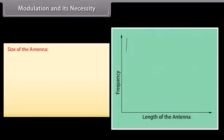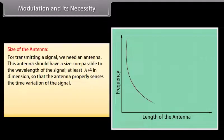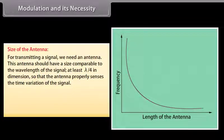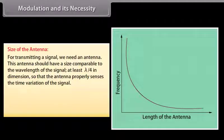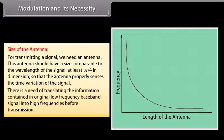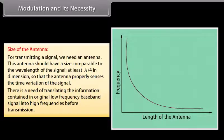Size of the antenna: for transmitting a signal, we need an antenna. This antenna should have a size comparable to the wavelength of the signal — at least λ/4 in dimension — so that the antenna properly senses the time variation of the signal. For an EM wave of frequency 30 kHz, the wavelength λ is 10 km. It is not possible to construct and operate such a long antenna.